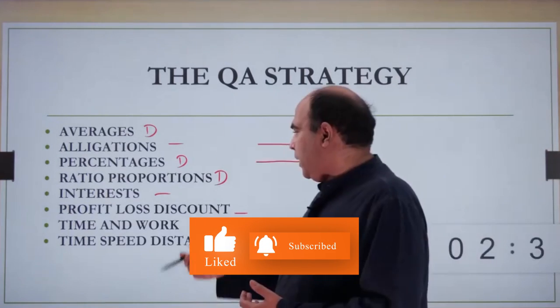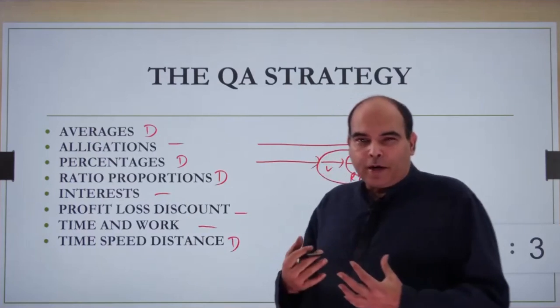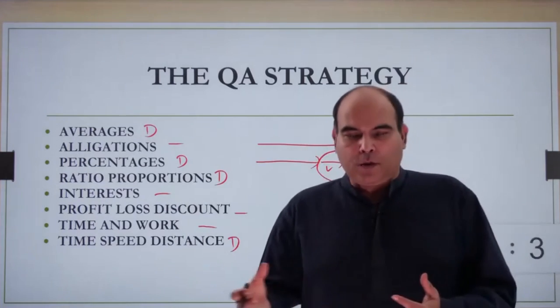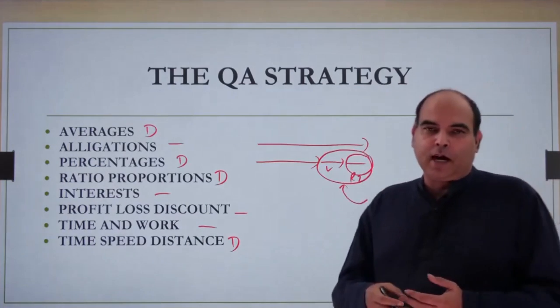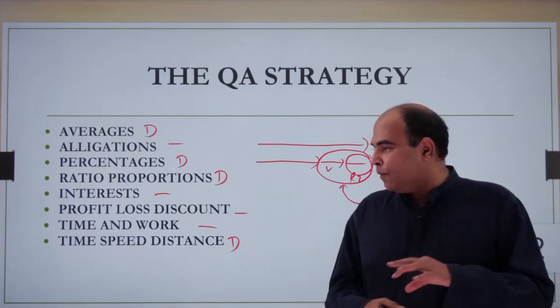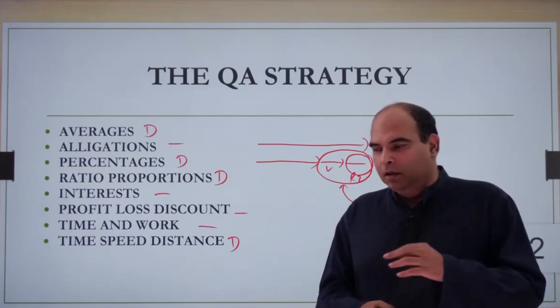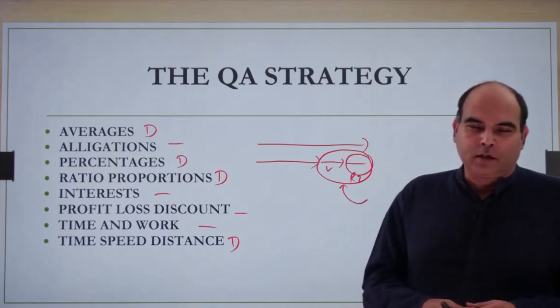Interest, profit-loss, and time-work are not very deep chapters. You just go through the LOD 1 and 2 once. You can check the past year CAT papers. If you have done the LOD 1 and 2 of these chapters once, you should be able to solve most of the questions from past years.